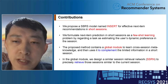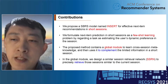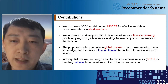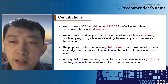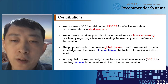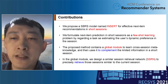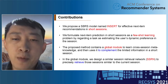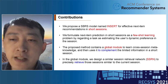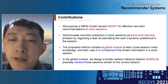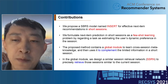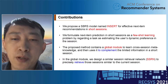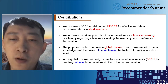In this work, we propose a session-based recommender system named InShot for effective next item recommendations in short sessions. Inspired by recent works in few-shot learning — which aims to generalize to new tasks containing only a few labeled examples — we formulate next item prediction in short sessions as a few-shot learning problem, regarding a task as estimating the user's dynamic preferences. We propose a method containing a global module and a local module.